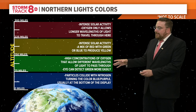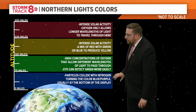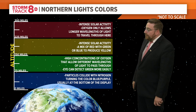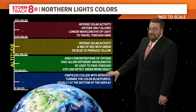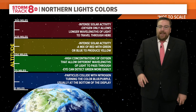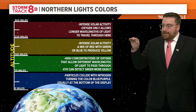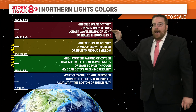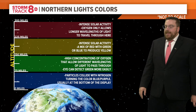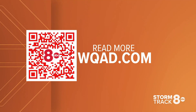More rare is the blue and purple appearance. That's when you have those particles interacting with the lowest part of the atmosphere — usually at the bottom of the display as well. There's more nitrogen at this level, which enhances that blue and purple color. Bottom line: the color of the Northern Lights depends on how high or how low into the atmosphere these charged particles are moving through. Green, of course, being the most common.